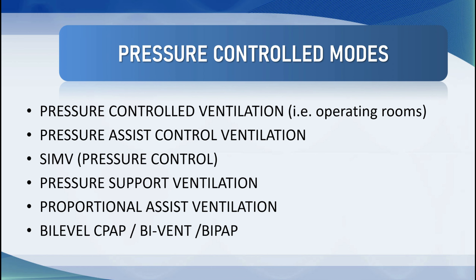There are lots of pressure control modes. The most commonly used is pressure assist control ventilation. There's also an SIMV version of pressure control, pressure support ventilation (which will have its own full tutorial), proportional assist ventilation, and a mode known as bi-level — sometimes called bi-level airway pressure, bi-level CPAP, bi-vent, or BiPAP. I just call this mode bi-level pressure control. What makes these modes different isn't the control breath but how the patient interacts with the machine.